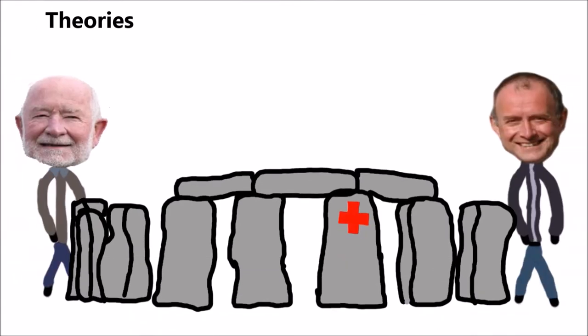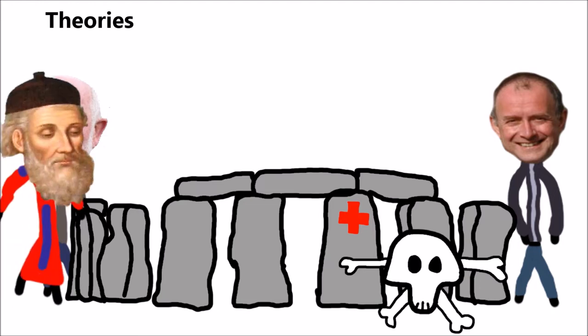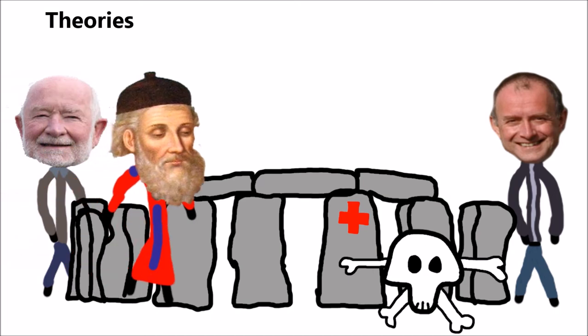Geoffrey Wainwright and Timothy Darvill in 2008 theorized that Stonehenge may have been an ancient healing and pilgrimage site. This is because many bodies buried around Stonehenge show evidence of trauma and deformity. The Greek historian Diodorus Siculus in the first century once said, a magnificent precinct sacred to Apollo and a notable spherical temple lies on a large island to the far north opposite Gaul. This historical account would back up this modern theory. This is because Apollo was recognized as the god of medicine and healing.